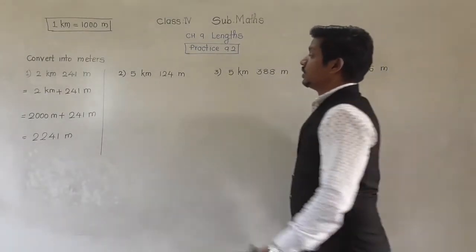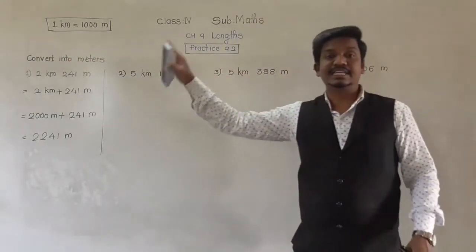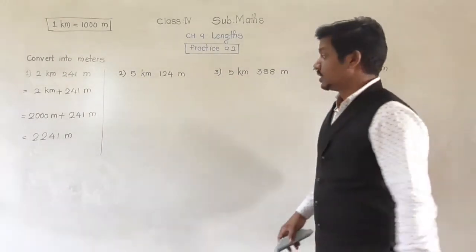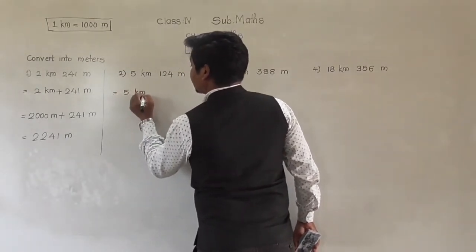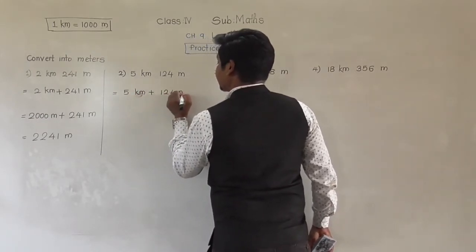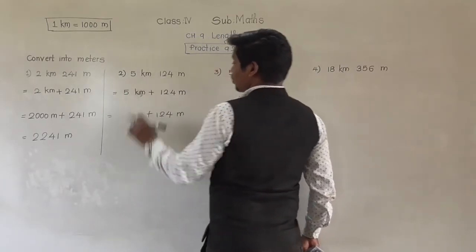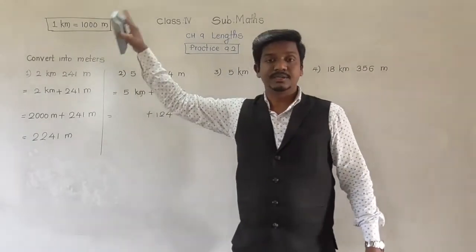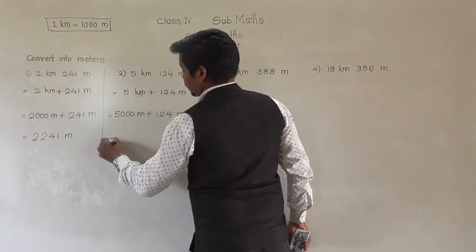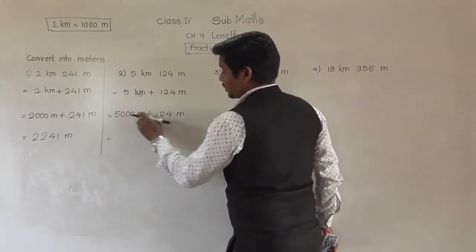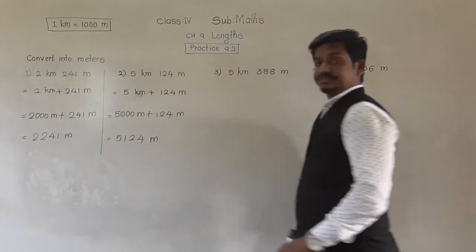Next, question 2: 5 kilometer 124 meter — convert into meters. The length is given in kilometer and meter and we have to convert the whole into meters. First put a plus sign between kilometer and meter: 5 kilometer plus 124 meter. Now 124 is already in meters, so take it as it is. 5 kilometer equals 5,000 meters. So 5,000 plus 124 equals 5,124 meters.